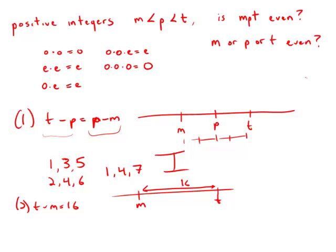Well, first of all, that gives us no information about p. And I point out, another way to say this is that t equals m plus 16. Well, if m is an even number, then even plus 16 would be even. But if m is an odd number, then odd plus 16 equals odd.